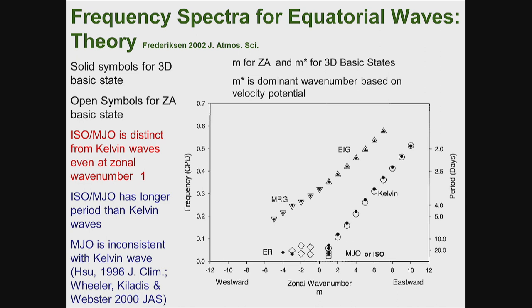Here is the wavenumber-frequency distribution for those theoretically generated modes. Wavenumber runs from zero at center — negative is westward propagation and positive is eastward propagation. Along one line, that's the Kelvin wave, where wavenumber and frequency are nearly linearly related. The MJO is at wavenumber one, different from the Kelvin wave. They also have the equatorial Rossby wave, mixed Rossby-gravity wave, and inertia-gravity waves — representing this spectrum dispersion relationship.